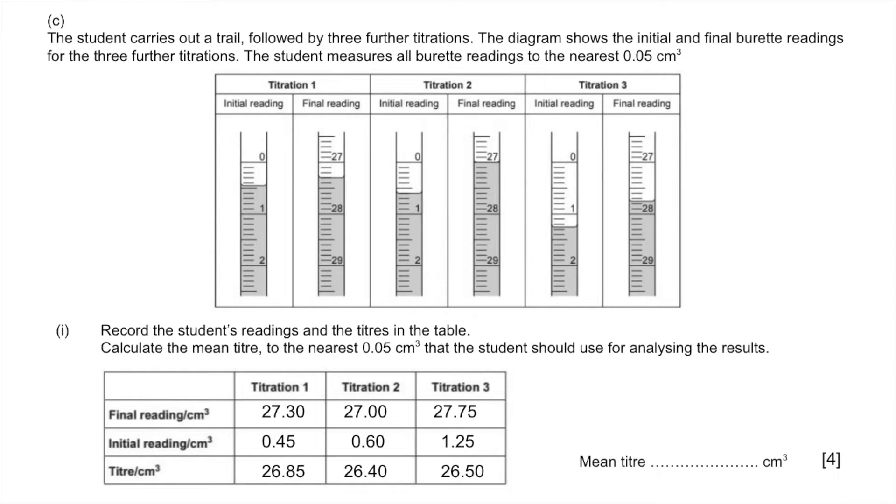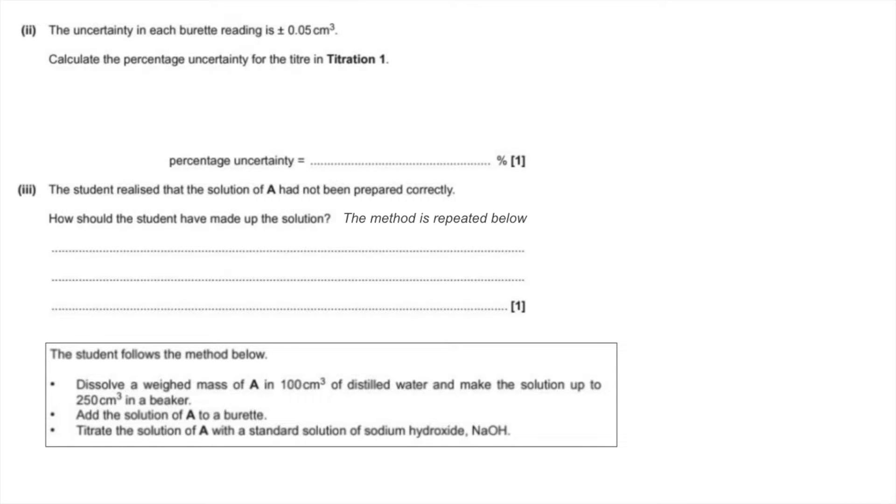When choosing which titration results should be used, you'll notice they haven't included the trial - these are the further titrations. Remember the trial is never used. We're looking for concordant results, in other words within 0.1 of each other. Therefore titration two and three are okay, but titration one is no good, so we're going to ignore that. The mean titre is 26.45.